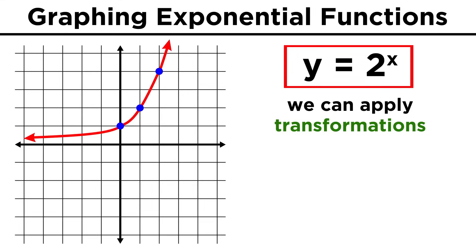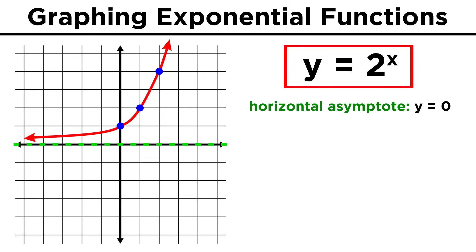Graphing can be a little trickier, but as long as we know what the basics look like, we can apply transformations just like we did for parabolas. Once again, two to the x looks like this. It has a horizontal asymptote in the x-axis, and the function will always be positive, because there is no exponent that two can be raised to in order to get a negative number.